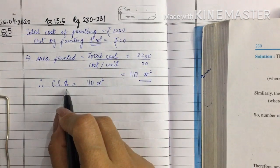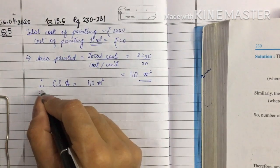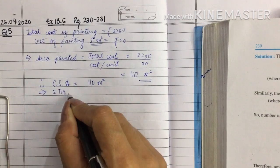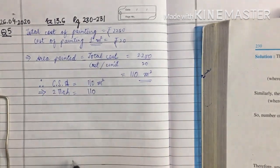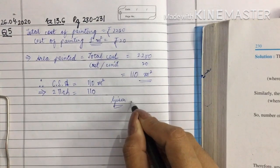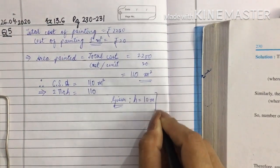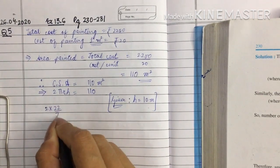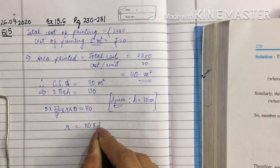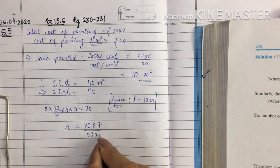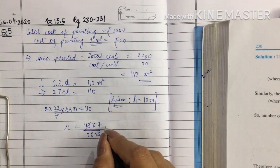Now using the curved surface area we will solve for the second part — finding the radius of the base. Using the formula for the curved surface area of a cylindrical vessel, 2πrh, this is equal to 110. We have been given that the depth of the vessel is 10 meters, so height h is 10 meters. Using this value and transposing all values to the right-hand side except r, we solve the equation.